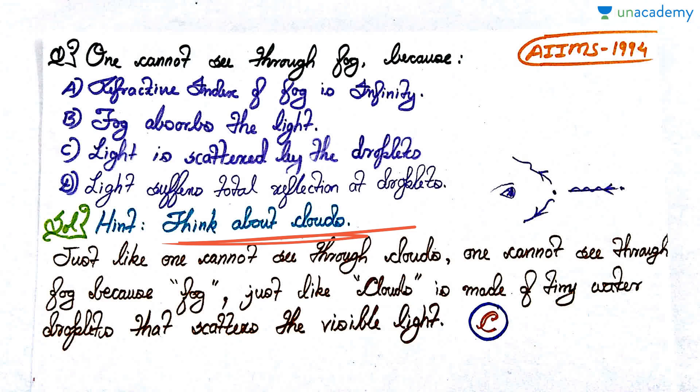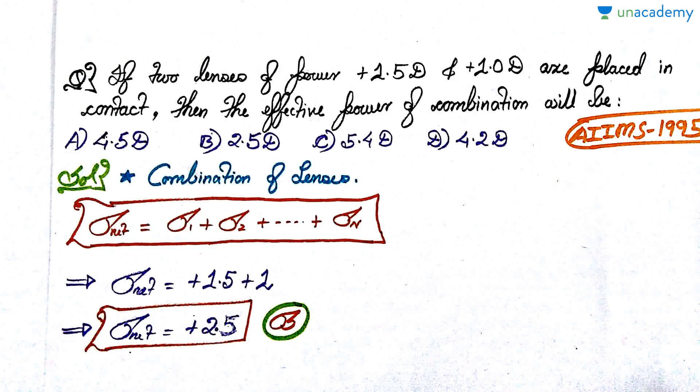One cannot see through clouds for the same reason why one cannot see through fog: fog is just like clouds, it is made of tiny water droplets. Both have the same physical composition. Tiny water droplets scatter the visible light. If suppose this water droplet is here and the ray is coming, it scatters the incoming ray so it won't be able to reach your eyes properly. Hence you won't be able to see properly. So one cannot see through fog because light is scattered by the droplets. Option C would be the correct answer.